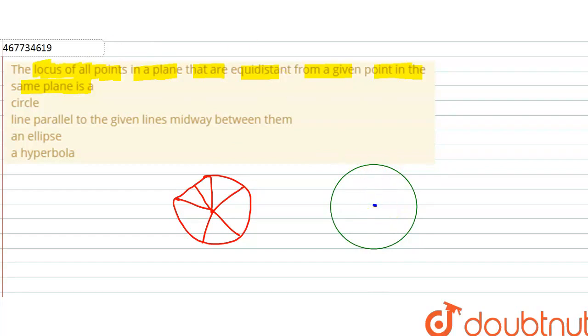With that point, all points are centered. This point will be the center. So given point with all equidistant points forms a circle. Okay, so the answer will be circle.